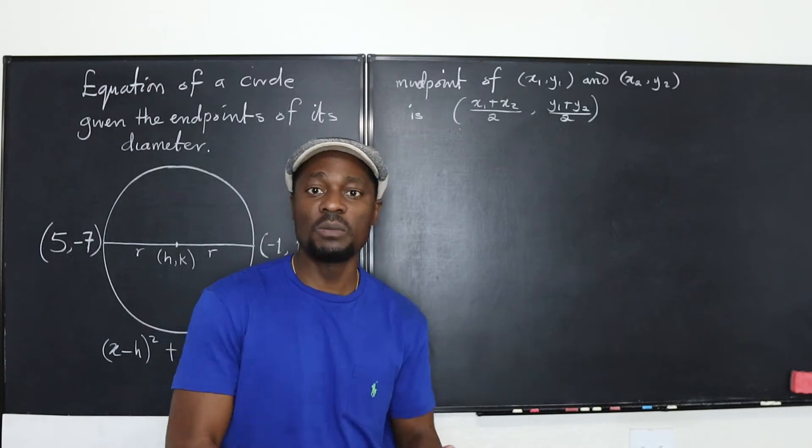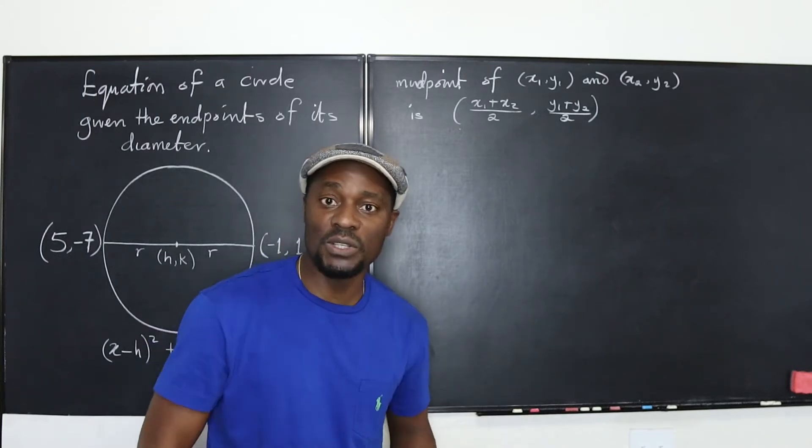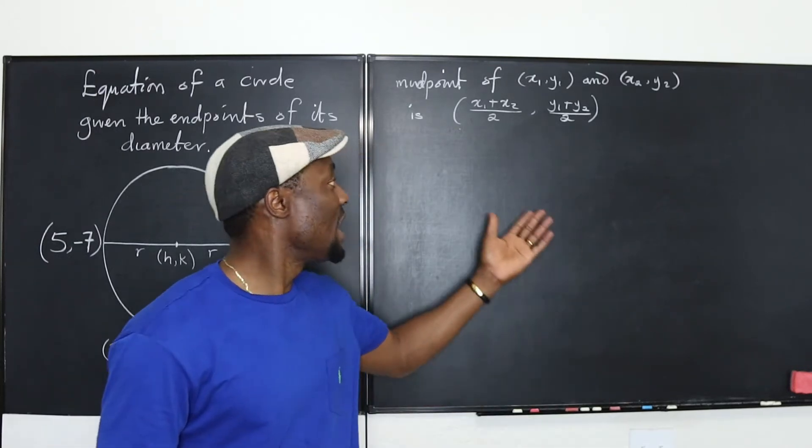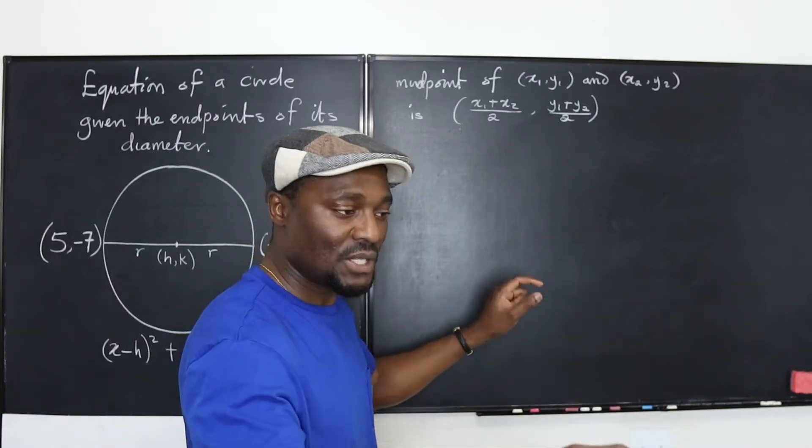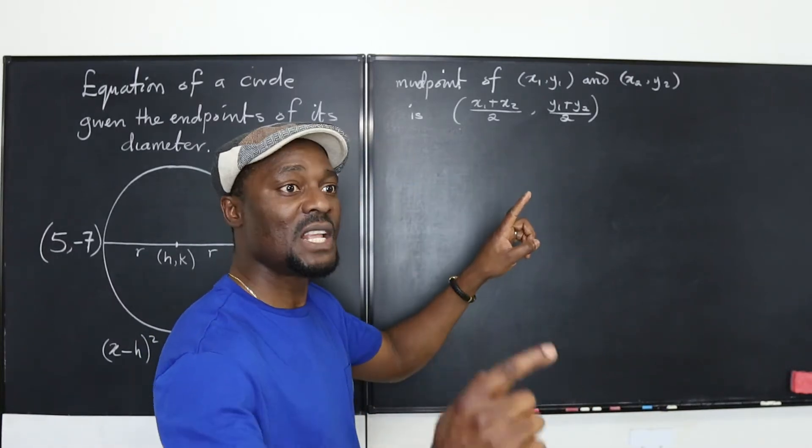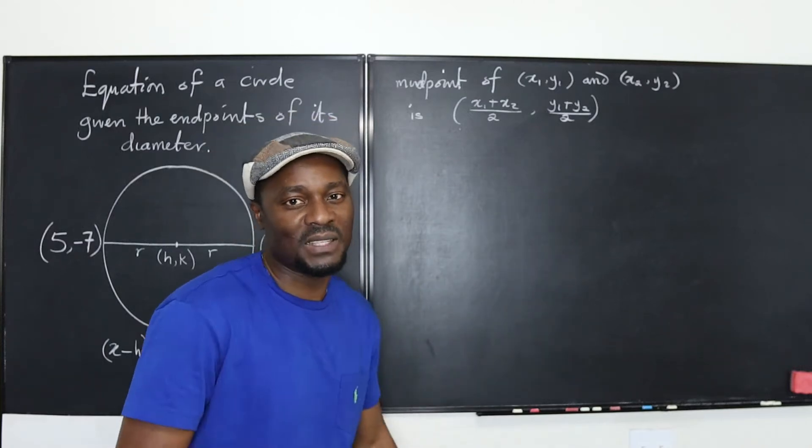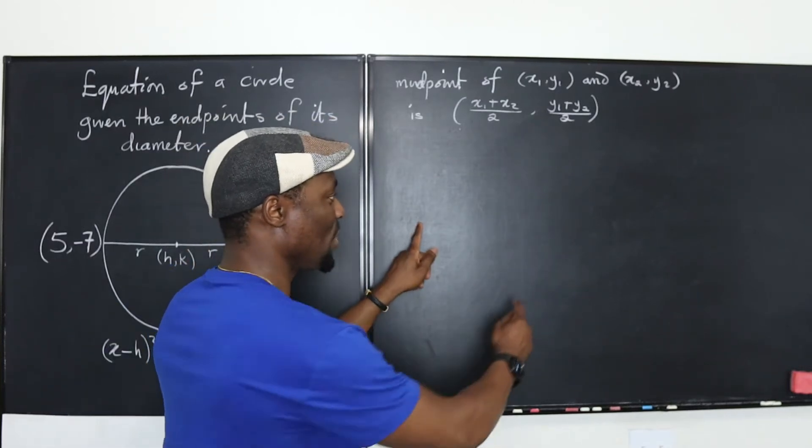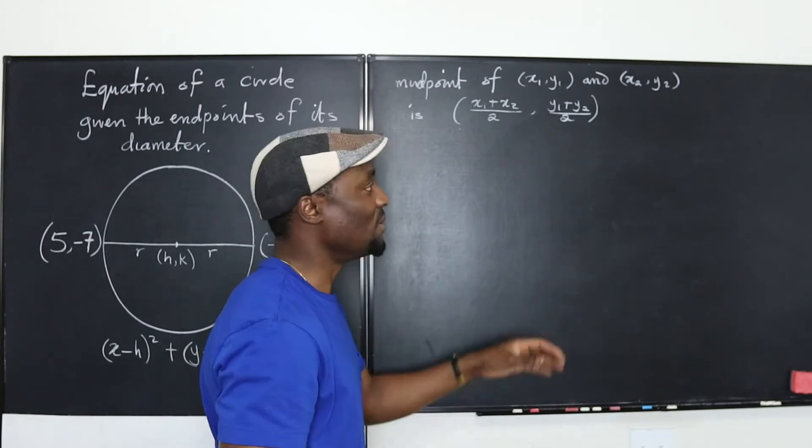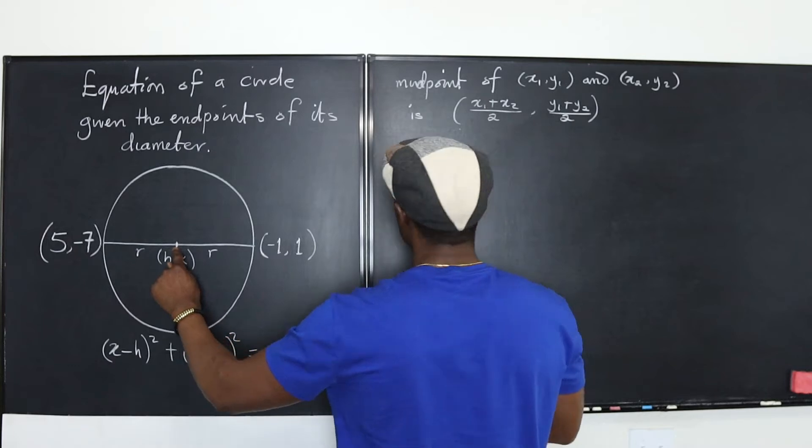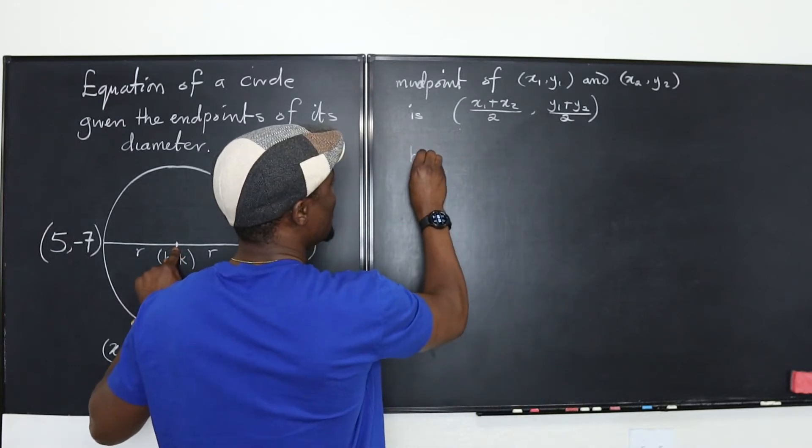This is the formula that you must know as a geometry student, as an algebra student. Whatever you're doing in math, if you have a line segment, the midpoint of the line segment, if you know the ends, is just add the beginning to the end and divide both by 2. That's it. It's like going from 0 to 10. Well, what's going to be halfway? It's going to be 0 plus 10 divided by 2.